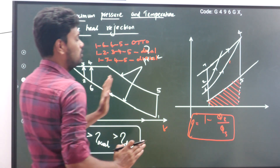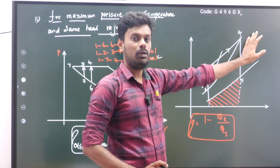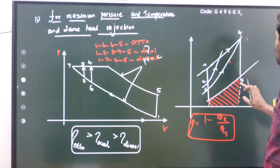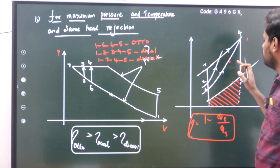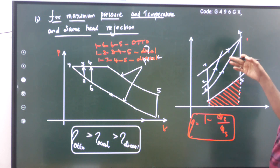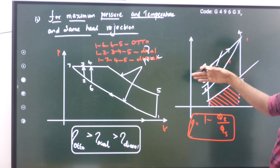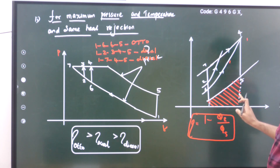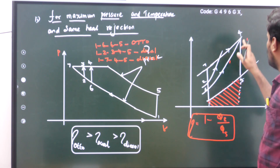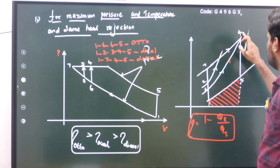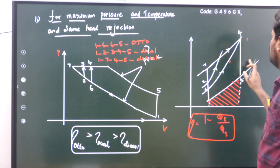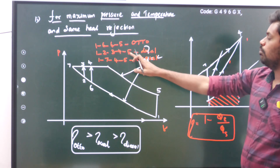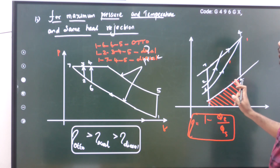The second condition is the same heat rejection. The heat rejection point is point number 5 — that is, heat rejection from point 4 to 5 at constant volume. In the TS diagram, the area under the curve indicates heat transfer. All cycles meet on this common line, and heat is rejected at constant volume from that point, giving a common heat rejection area for all cycles.